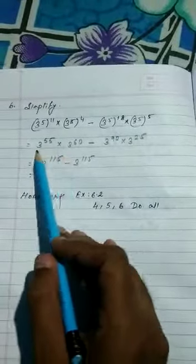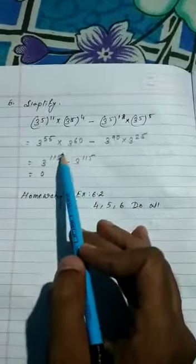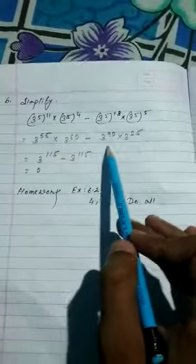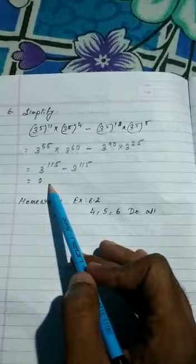If you multiply with the same base, you add the powers. So 60 plus 55 is 115 minus 3 to the power, power addition 90 plus 25, 115. Same thing is subtracted, so the result will be 0.